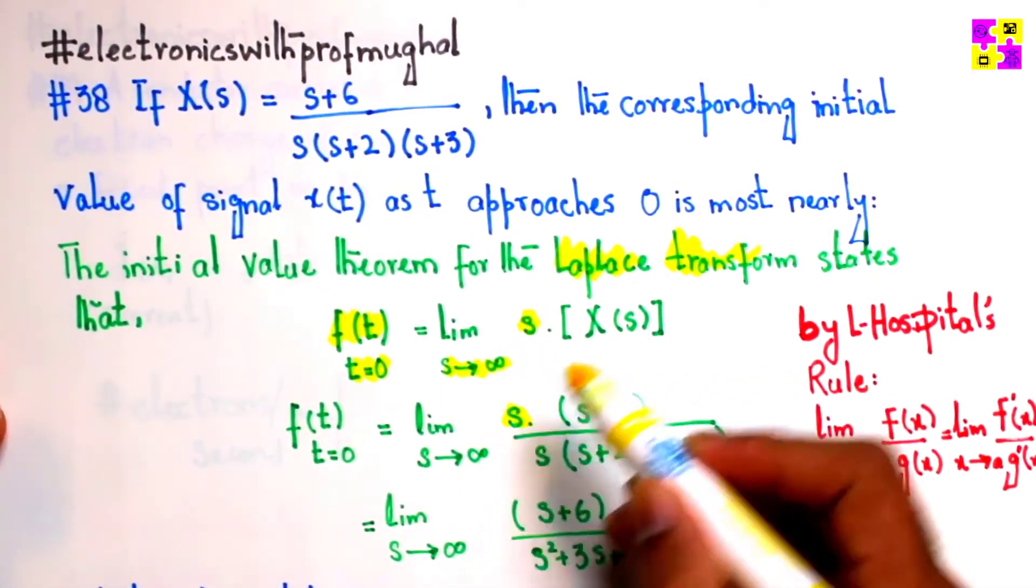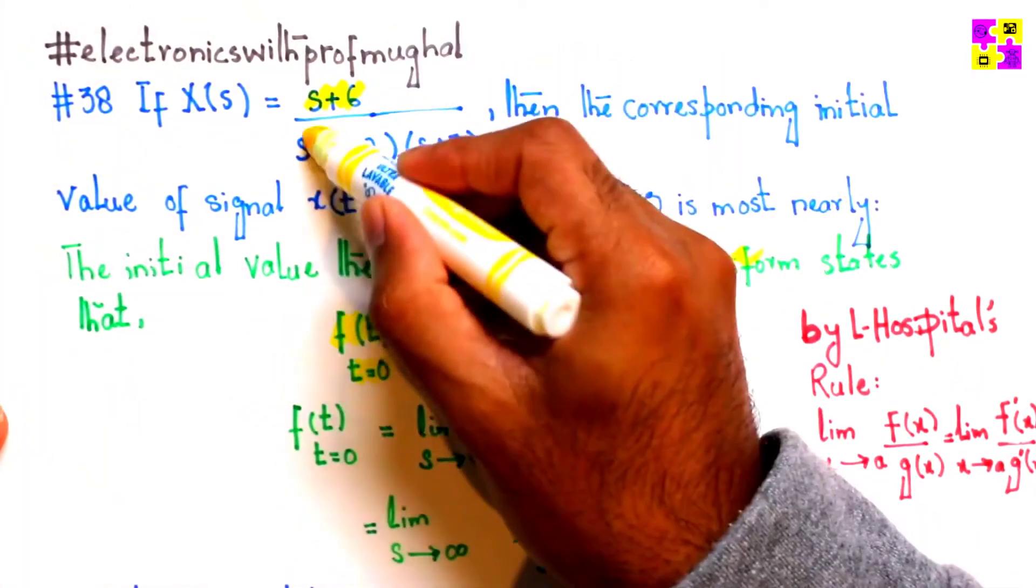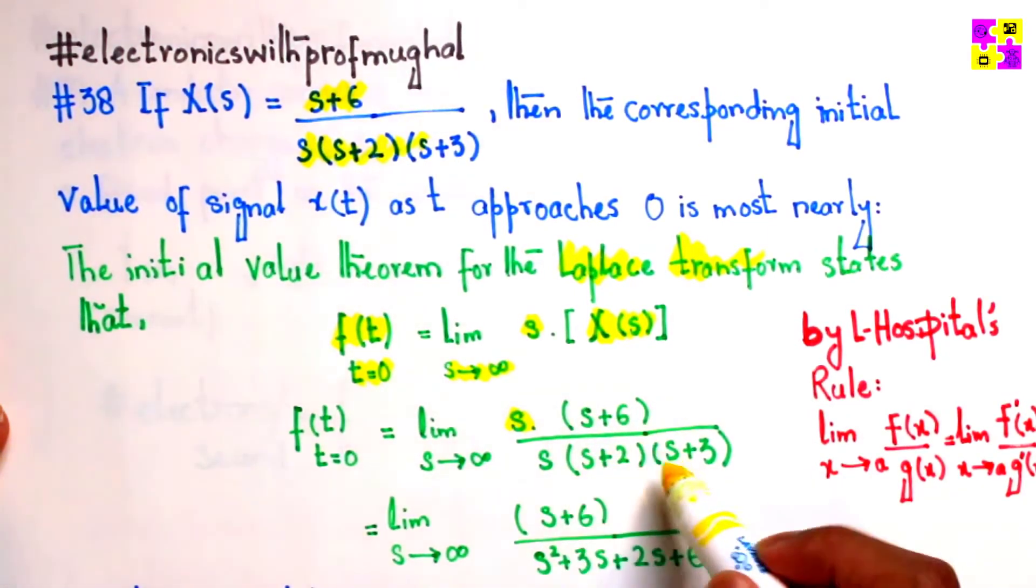This s simply comes over here, and if I replace this X(s) with the function given here, I will just put it over here.